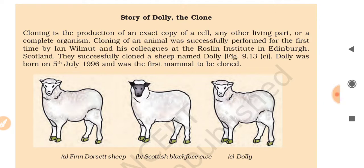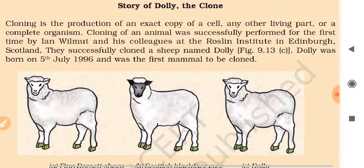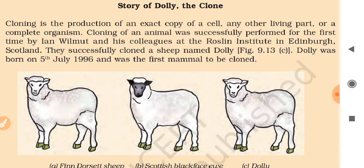Another interesting story in this chapter is about Dolly the clone. Cloning is the production of an exact copy of a cell, any other living part, or a complete organism. Cloning of an animal was successfully performed for the first time by Ian Wilmot and his colleagues at the Roslin Institute of Edinburgh. They successfully cloned a sheep named Dolly. Dolly was born on 5th July 1996 and was the first mammal to be cloned.